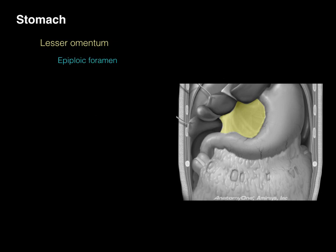The lesser omentum also gives rise to an opening called the epiploic foramen. The epiploic foramen goes into a portion deep to the lesser omentum called the lesser sac — a blind-ended cul-de-sac deep to the lesser omentum and stomach.